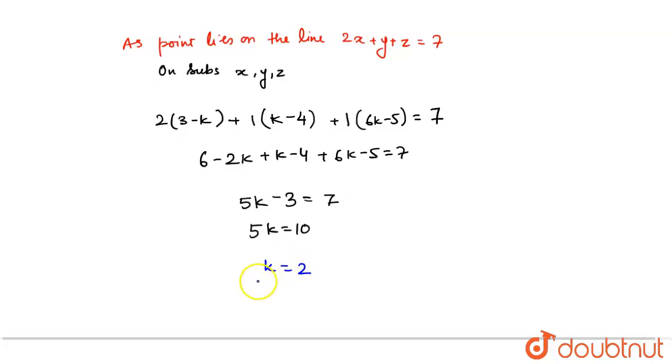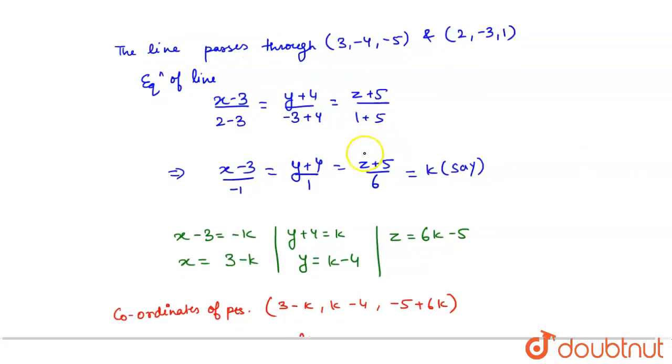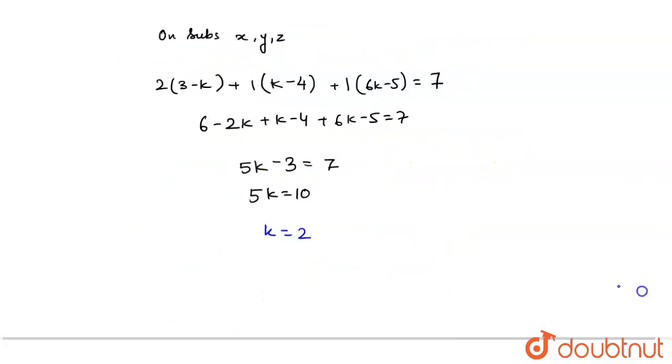Now, substituting the value of k, we will get the coordinates. Substituting k = 2, we get the coordinates as (3 - 2, -4 + 2, -5 + 6 × 2).